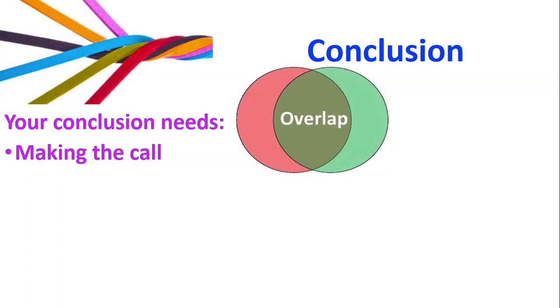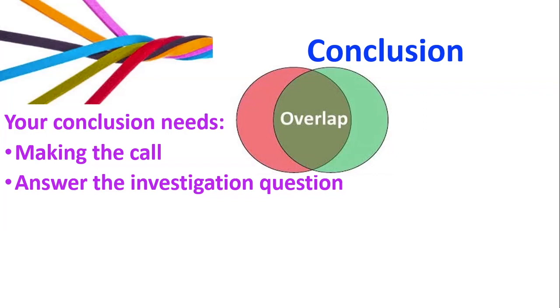We need to be able to make the call. And this is looking at how much overlap there is, and have I got enough evidence? Are the medians far enough apart for me to have enough evidence to say that they're different? I need to answer my investigation question. I need to make an inference, and I'll talk more about that in a bit. And we need to discuss what cycling variability is.